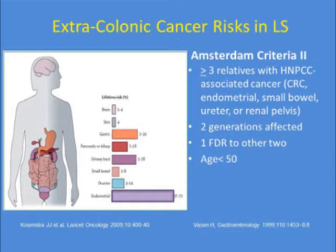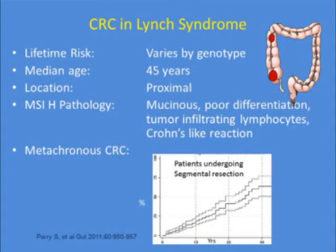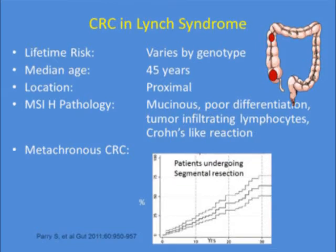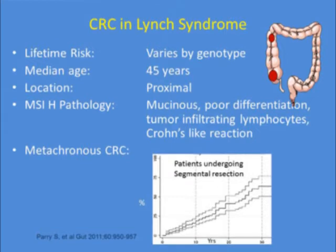There's a potpourri of other tumors that can develop, including brain, hepatobiliary, gastric, and small bowel. The colorectal cancer in Lynch syndrome has additional clues: the median age of onset is less than 50, these are proximal tumors, and the pathologist can give you the tip-off — they're mucinous, poorly differentiated, with tumor-infiltrating lymphocytes and a Crohn's-like reaction. Metachronous colorectal cancer occurs in many of these individuals over time.